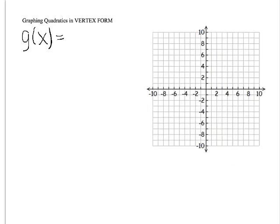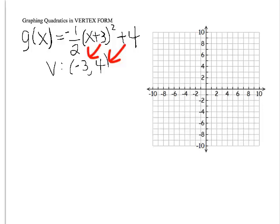Let's say that g(x) equals negative 1 half quantity x plus 3 squared plus 4. So your vertex is negative 3 comma 4. Let's plot that first.